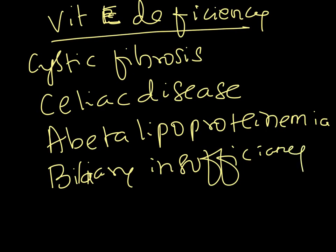Vitamin E deficiency can be seen in biliary insufficiency, which causes malabsorption of lipids and thereby fat-soluble vitamin deficiency. In summary, the main causes are cystic fibrosis, celiac disease, abetalipoproteinemia, biliary insufficiency, and exocrine pancreatic disorders — essentially any condition leading to lipid malabsorption.